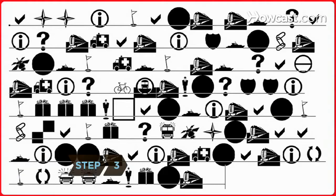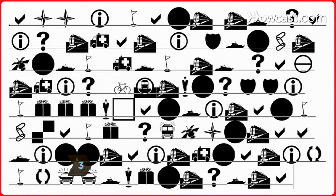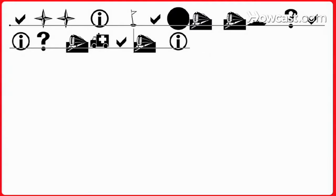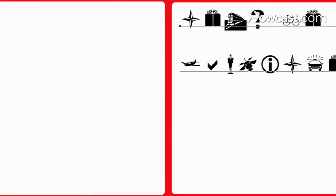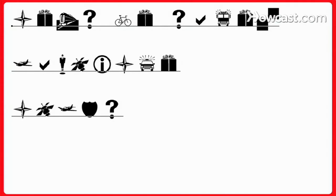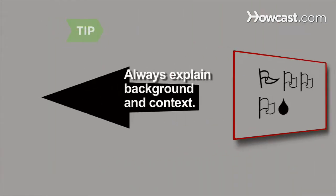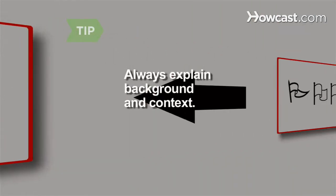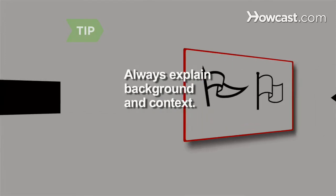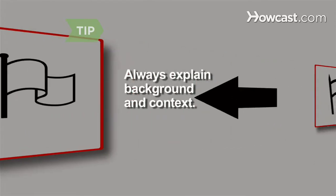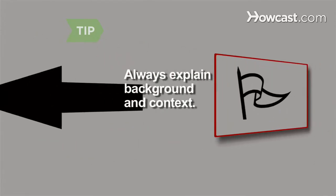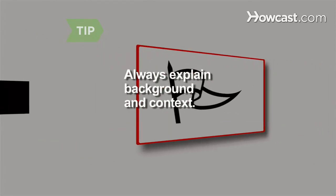Step 3: A successful blog is not a history lesson. Your writing should reference current events and stick to the facts — human rights abuses don't need embellishment. While staying current, always explain background and context. Assume your readers know nothing about the situations you're describing.